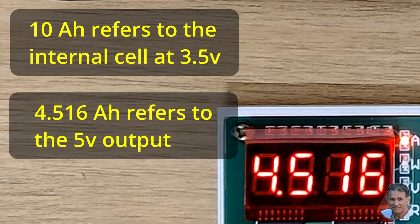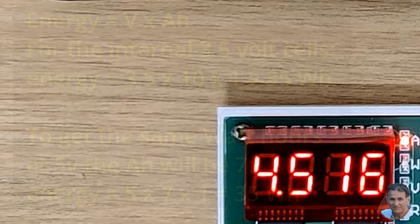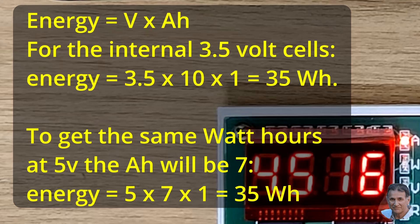If we now take the voltages into account, we can compare the energy in watt hours. Energy is voltage times ampere hours. The maximum energy that can be stored in the cell is 35 watt hours. So with a perfect conversion from 3.5V to 5V, we would only measure 7 ampere hours.